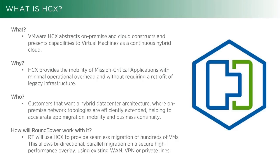Who needs this? Anyone who's looking to really get the most out of a hybrid cloud experience for their chosen VMware Cloud on AWS. The way Roundtower uses this is to seamlessly migrate tens to hundreds of VMs bi-directionally in parallel through secure channels over existing WAN. There's no need to spin up or buy dedicated circuits or direct connects or anything like that. We're able to use existing WAN and just set up secure VPN tunnels to do all that work.